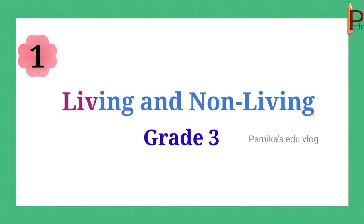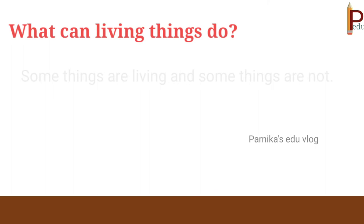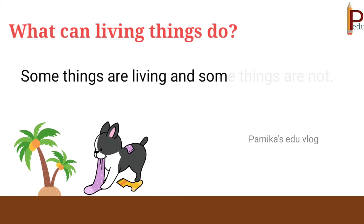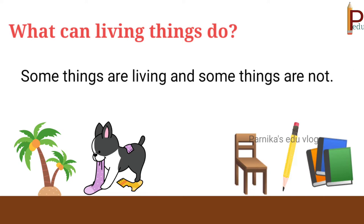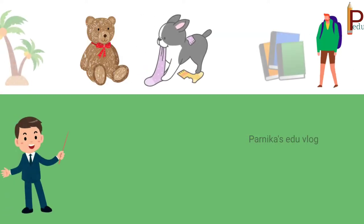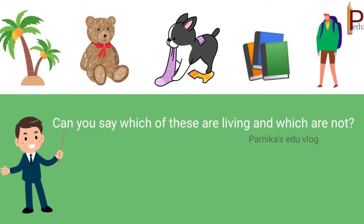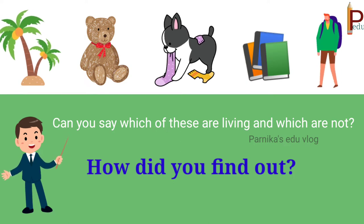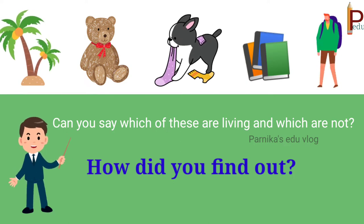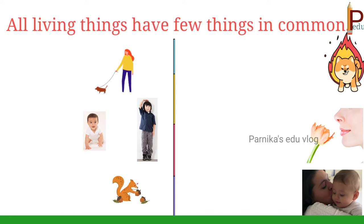Let's start lesson number one: living and non-living. What can living things do, children? Some things are living and some things are not. Plants and animals are living. Chair, pencil, and books are non-living. Children, see the pictures here — can you see which of these are living and which are not? How did you find out? You should know some characteristics of living things.